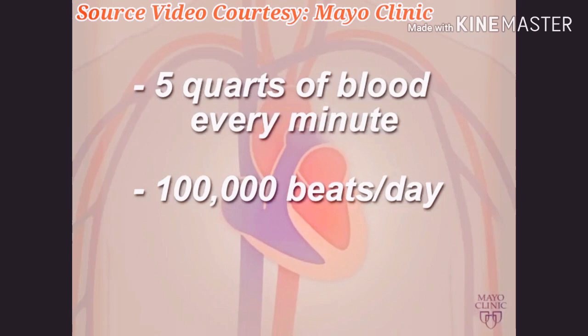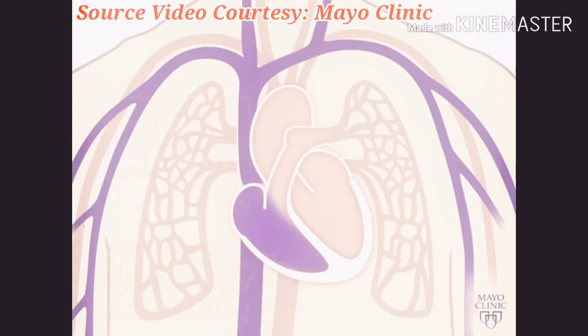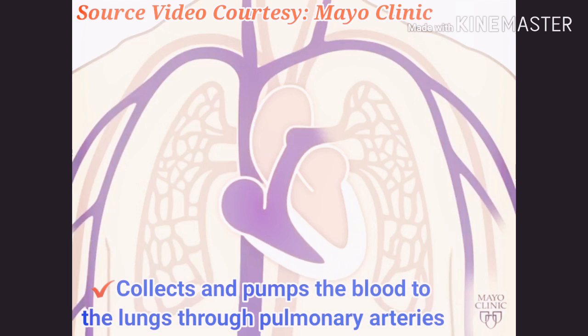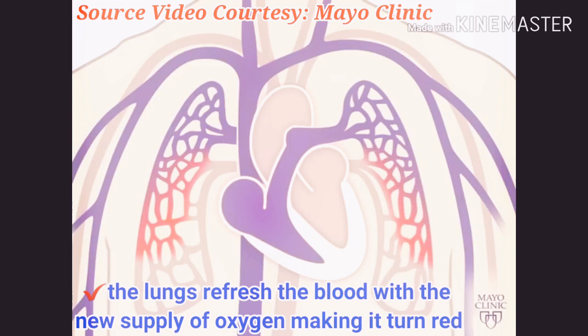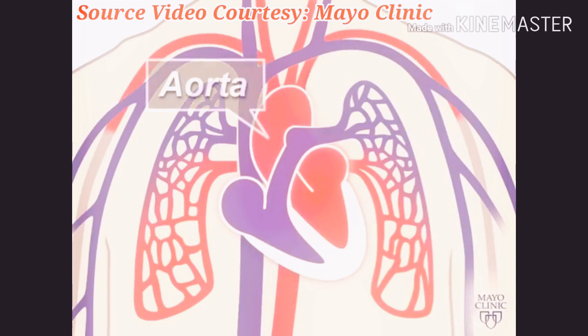Oxygen-poor blood returns to the heart after circulating through your body. The right side of the heart, composed of the right atrium and ventricle, collects and pumps blood to the lungs through the pulmonary arteries. The lungs refresh the blood with a new supply of oxygen, making it turn red. Oxygen-rich blood then enters the left side of the heart, composed of the left atrium and ventricle.